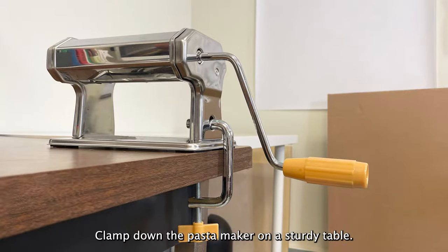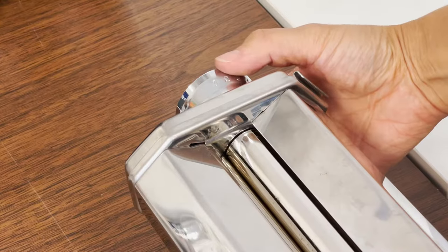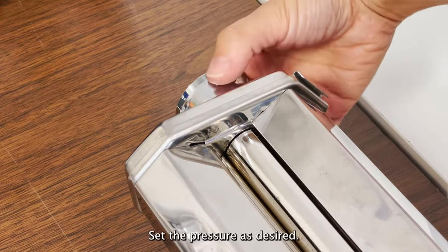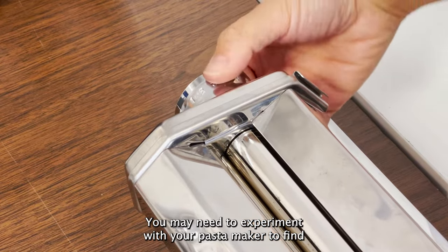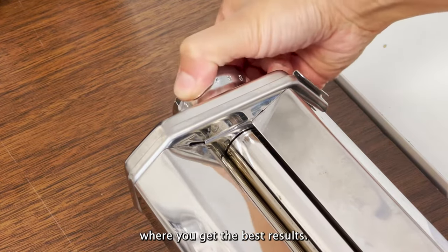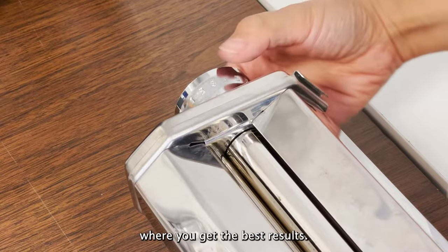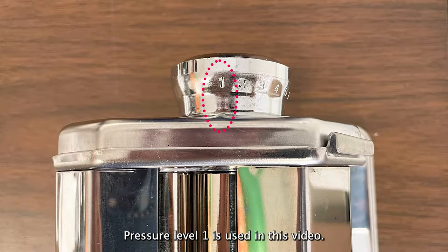Clamp down the pasta maker on a sturdy table. Set the pressure as desired. You may need to experiment with your pasta maker to find where you get the best results. Pressure level 1 is used in this video.